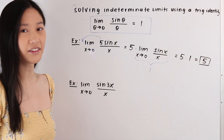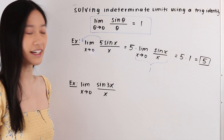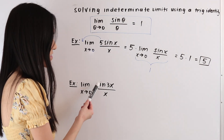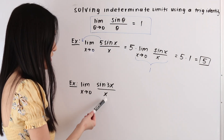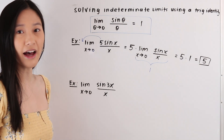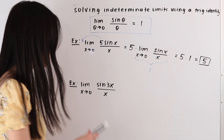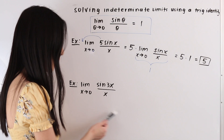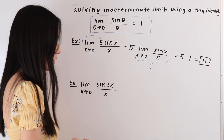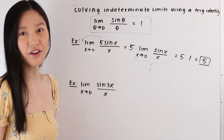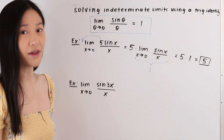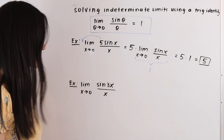Now let's take a look at this next example. We have the limit as x approaches zero of sine of three x over x. The first thing that we always do when solving a limit problem algebraically is plug in the value into our function f of x. When we do that we get zero over zero, which is an indeterminate form, meaning we need to use another method.